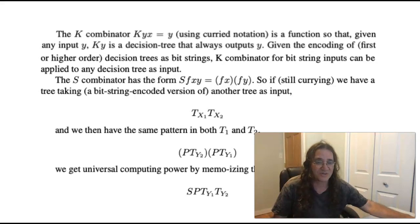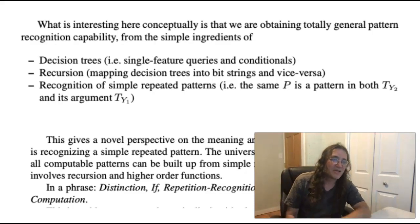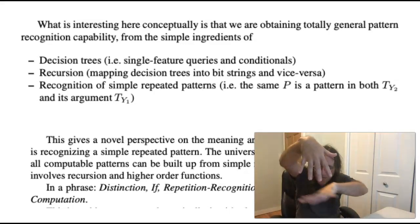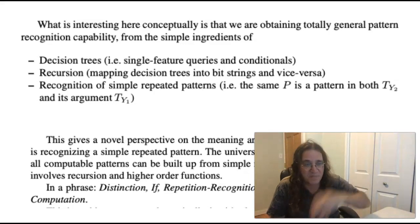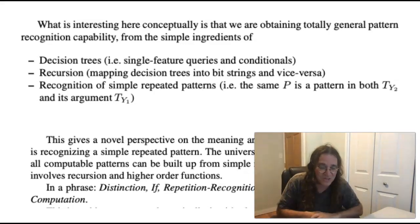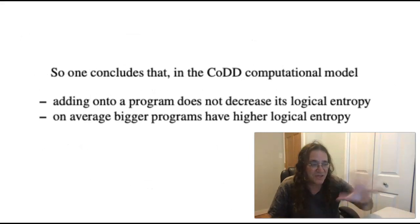So the conclusion you come to is basically you have decision trees which are single feature queries and conditionals, you have recursion, basically being able to encode a decision tree to feed into another decision tree, you have basic pattern recognition, pattern-based memoization, static pattern recognition, and then ta-da, right, then you have universal computing. And you have also a neat relation with logical entropy.